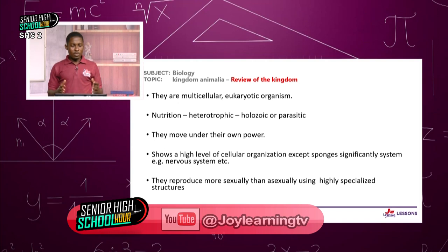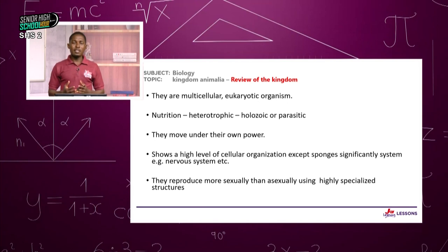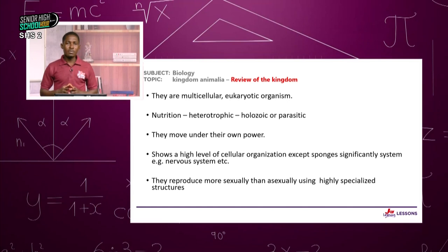The next thing is nutrition. Plants are autotrophic, as we studied. But for animals, we are heterotrophic — either holozoic or parasitic. We can be saprophytic, but those are for the fungi group. One other unique feature of animals is that usually they move on their own, harnessing power from within to force them to move, compared to some other organisms.